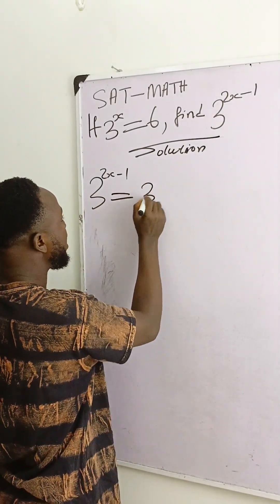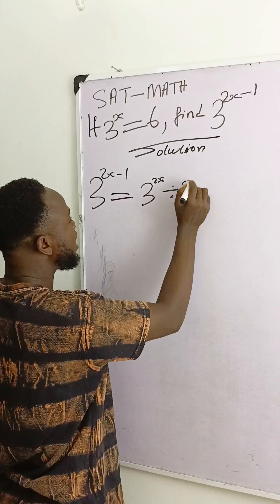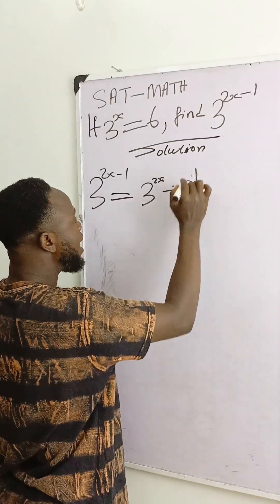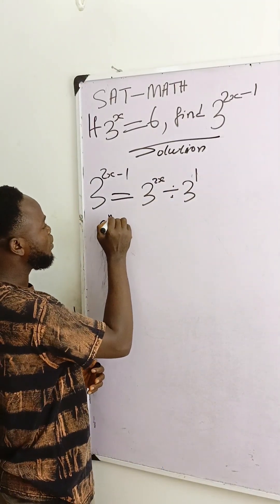This is equal to 3 exponent 2x divided by 3 exponent 1. I applied this law of indices.